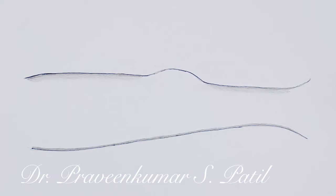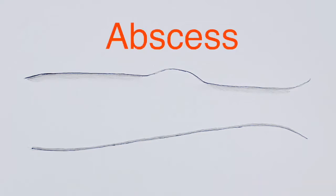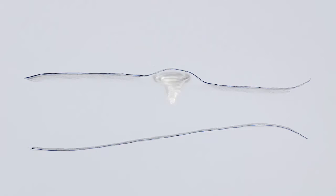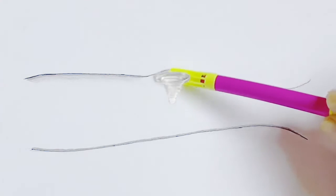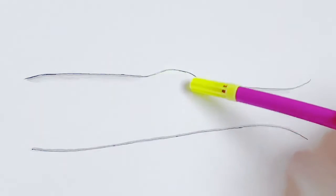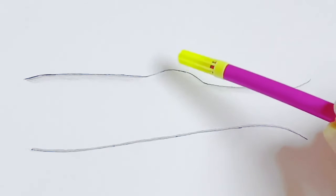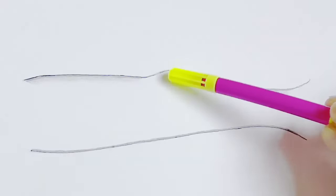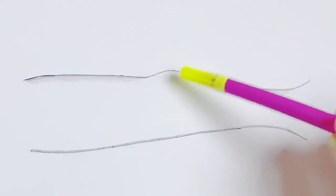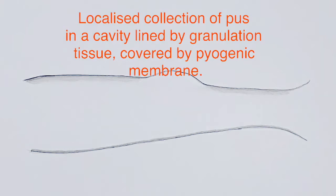Hi everyone, this is Dr. Pravinas Patil. Today we are going to talk on abscess. An abscess is a localized collection of pus in a cavity which is lined by granulation tissue and covered by the pyogenic membrane. We will discuss granulation tissue and pyogenic membrane later.